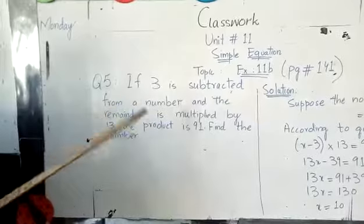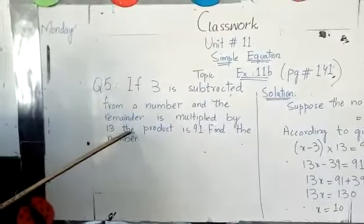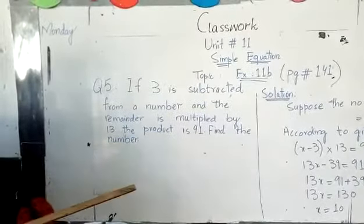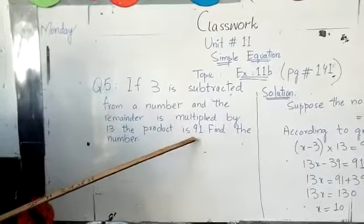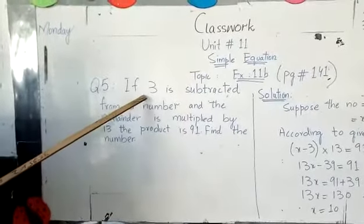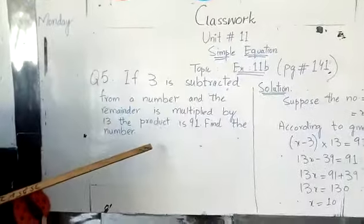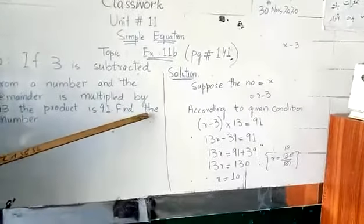If we multiply by 13, the product is 91. The product is 91. Suppose the number from which we subtract 3. We have to find the number.